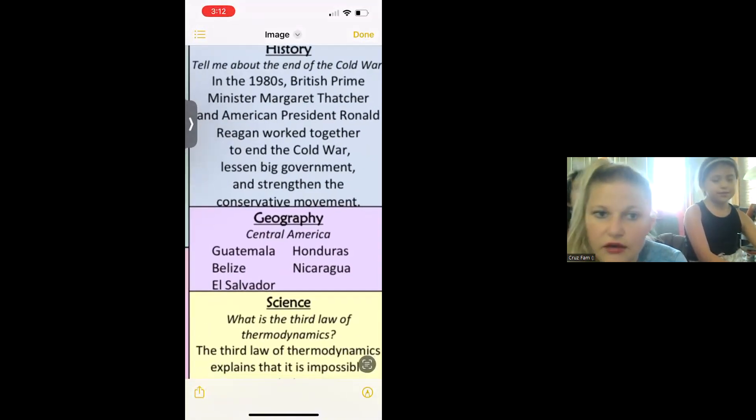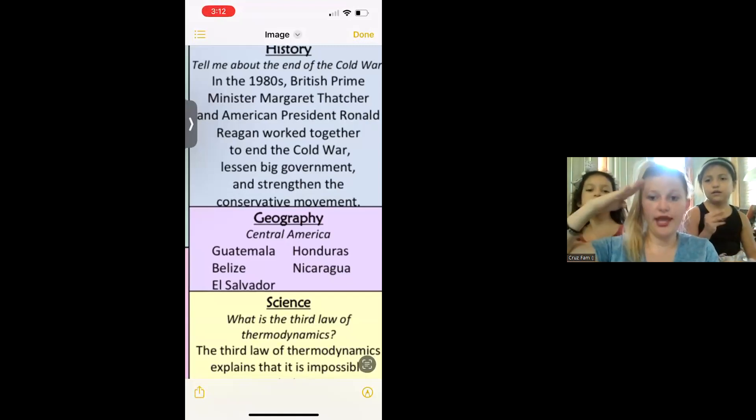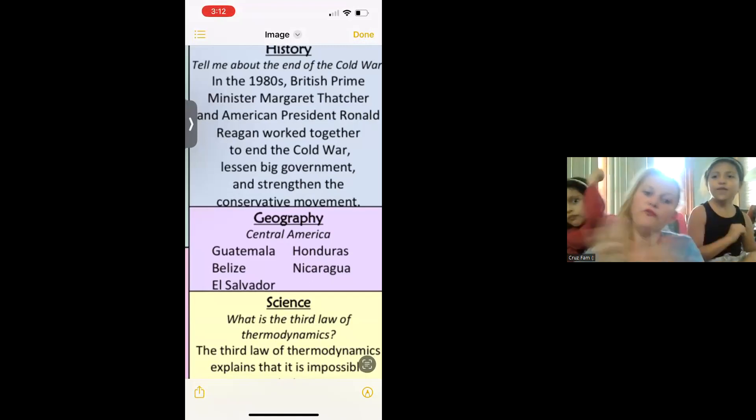History. Tell me about the end of the Cold War in the 1980s. British Prime Minister Margaret Thatcher and American President Ronald Reagan worked together to end the Cold War, less big government, and strengthened the conservative movement.